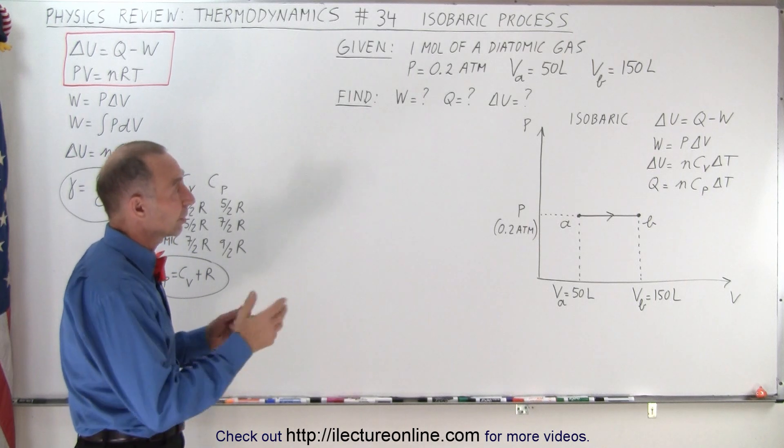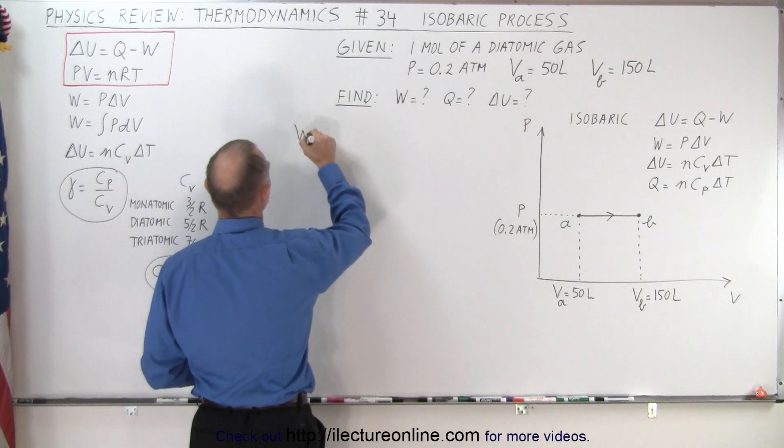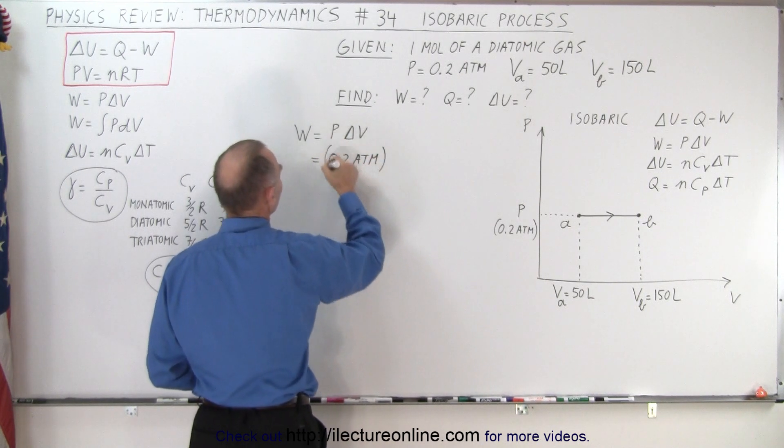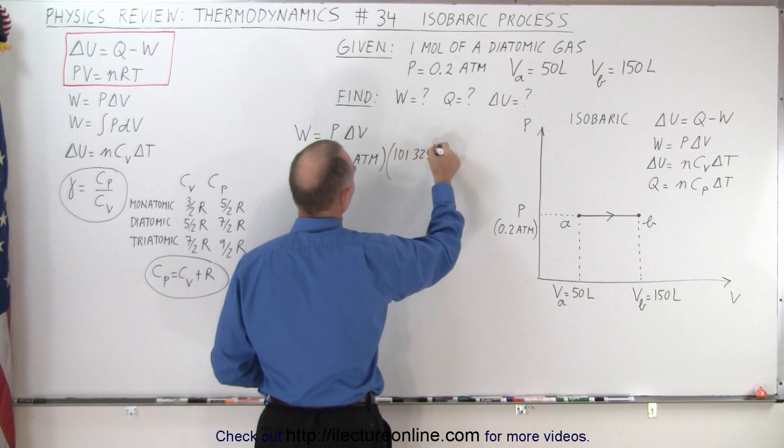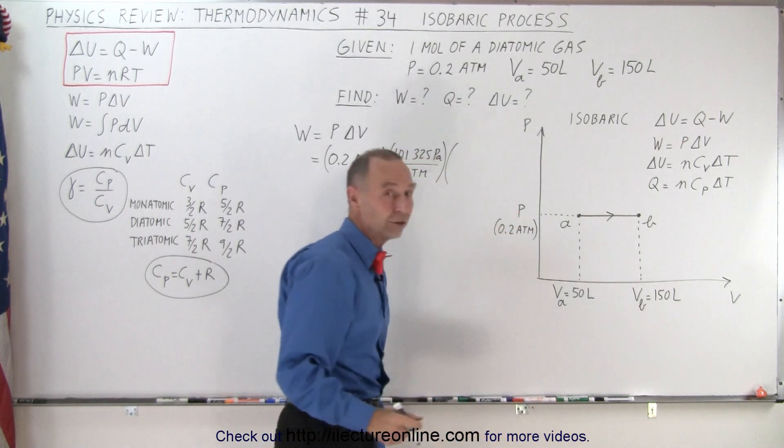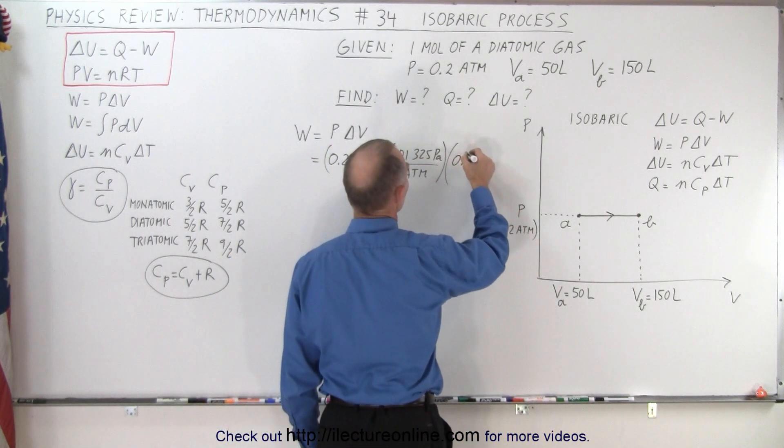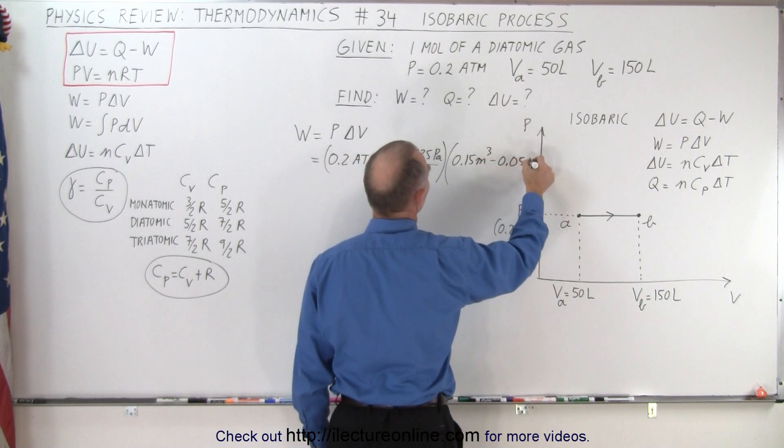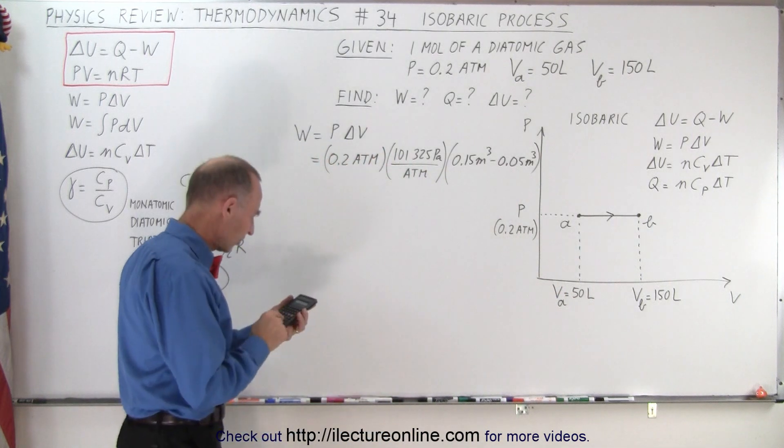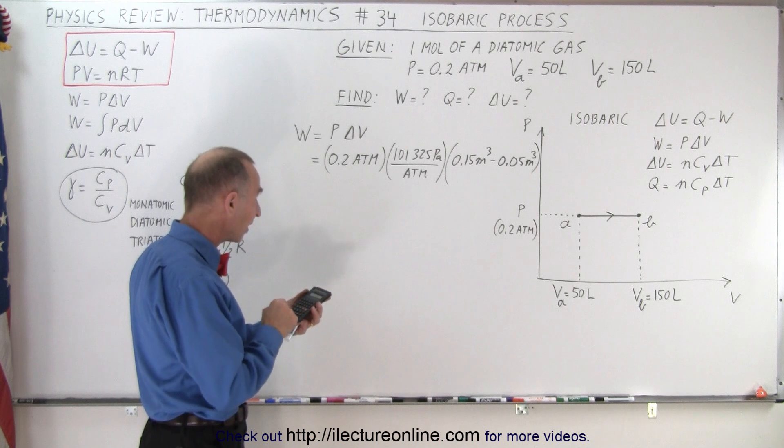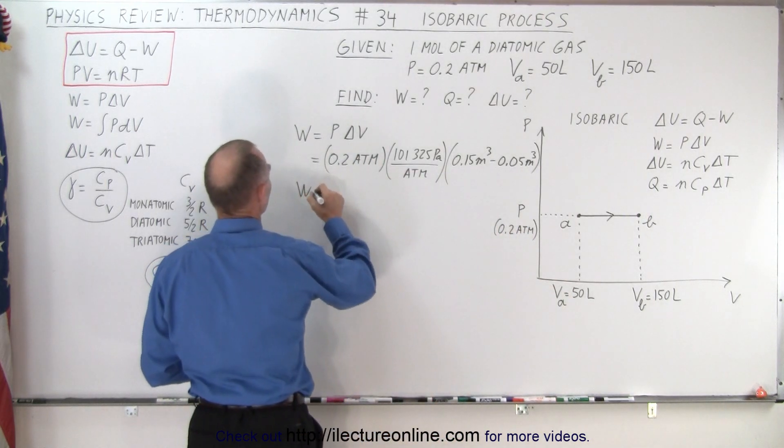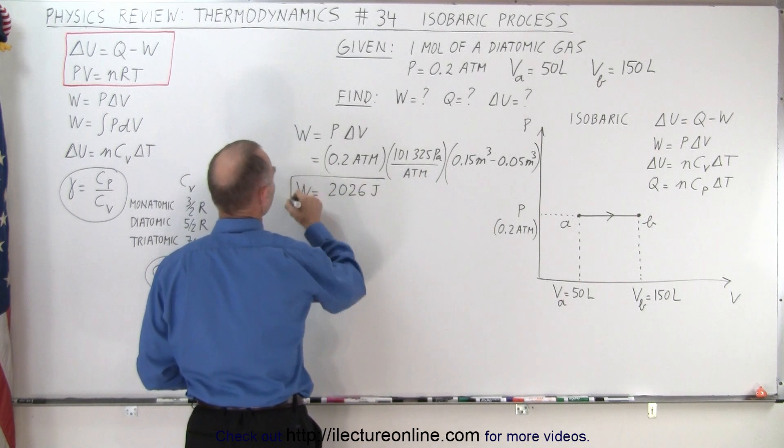We can easily figure out the work done because it's pressure times the change in the volume. So the work done equals the pressure times the change in the volume. The pressure is 0.2 atm, but we have to convert that to pascals, that's 101,325 pascals per atmosphere. The change in the volume, we have to convert that to cubic meters. A thousand liters go into cubic meters, so it would be 0.15 cubic meters minus 0.05 cubic meters, essentially 0.1 cubic meters. With the calculator we can quickly figure that out. 0.2 times 101,325 times 0.1 equals 2,026 joules. So the work done equals 2,026 joules.